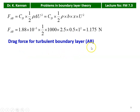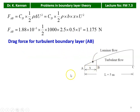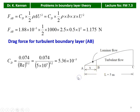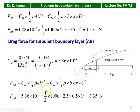For the turbulent boundary layer, first consider a to b as if entirely turbulent. CD = 0.074 / Re^0.2 = 0.074 / (5 × 10⁵)^0.2 = 5.36 × 10⁻³. Drag force (a to b, assumed turbulent) = CD × ½ρ × b × x × U² = 5.36 × 10⁻³ × ½ × 1000 × 2.5 × 0.5 × 1² = 3.35 N.